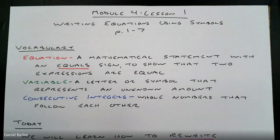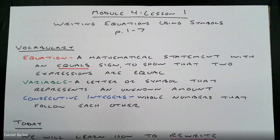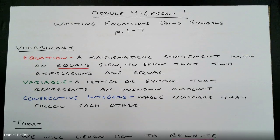The next vocabulary word is variable, which you've probably heard before. A variable is a letter or a symbol — it does not have to be a letter, it can also be a symbol. Like pi, which is actually a Greek letter but used as an English symbol. A variable is a letter or symbol that represents an unknown amount. It's what we use when we do not know what's going to go in the equation.